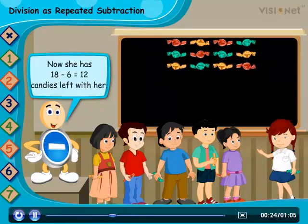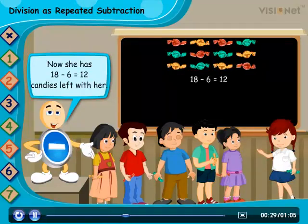Now she has 18 minus 6 is equal to 12 candies left with her.